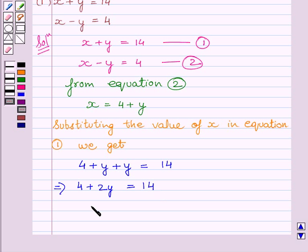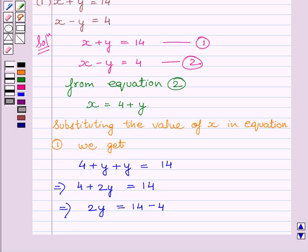We can say 2y equals 14 minus 4, which implies 2y equals 10. Therefore, y equals 10 divided by 2, which equals 5.